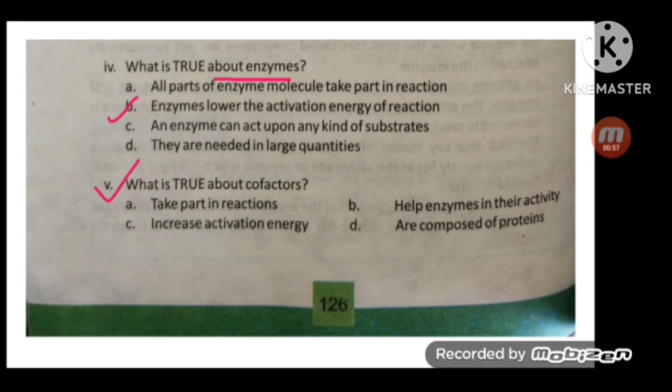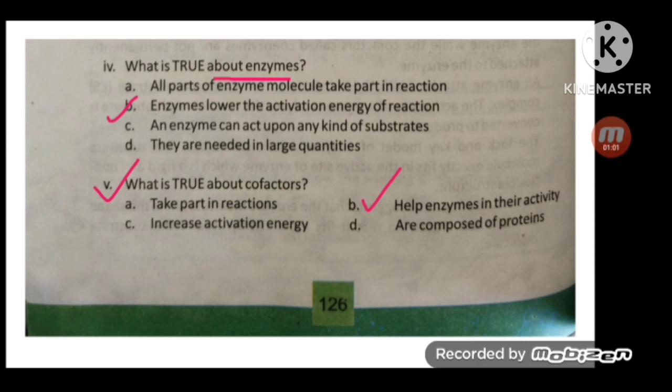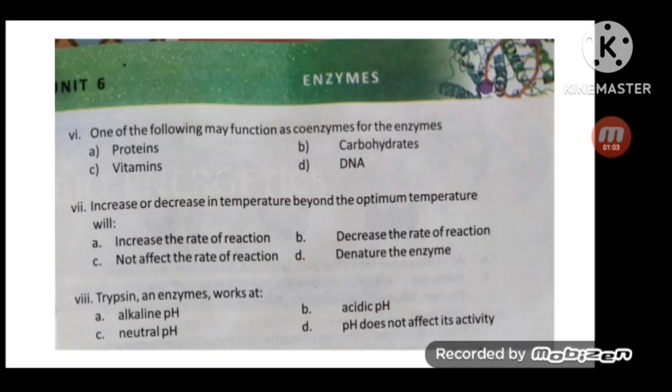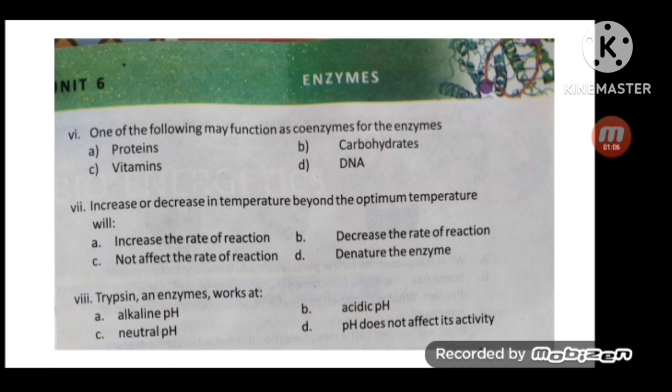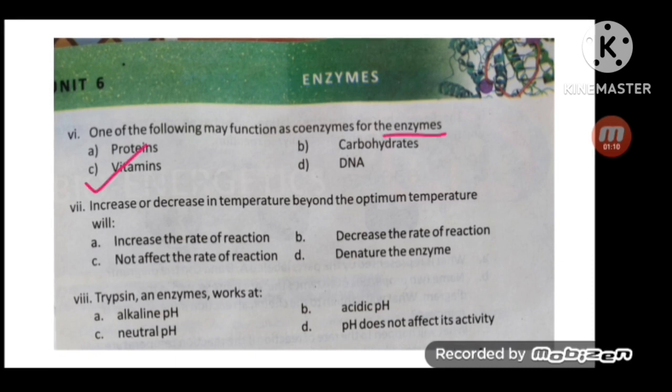What is true about cofactors? The correct option is B: enzyme cofactors help enzymes in their activity. One of the following may function as coenzyme for the enzyme. Here the correct option is vitamins.